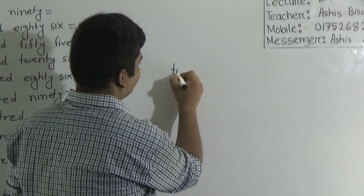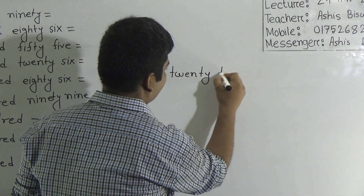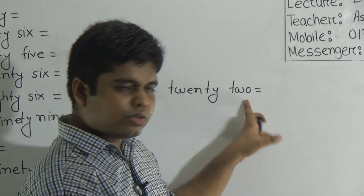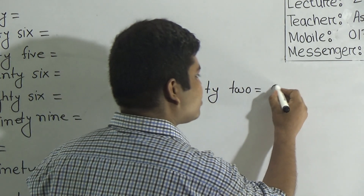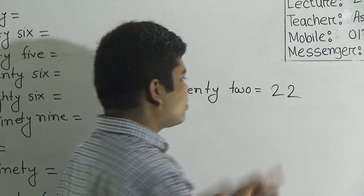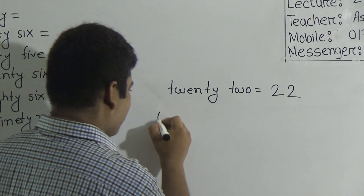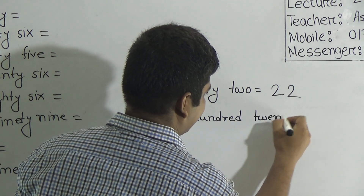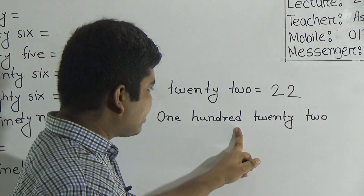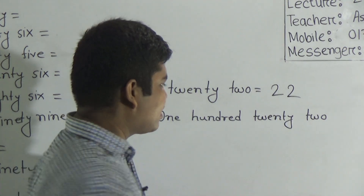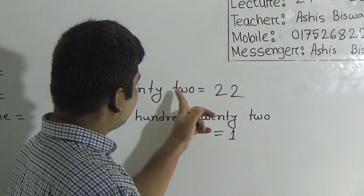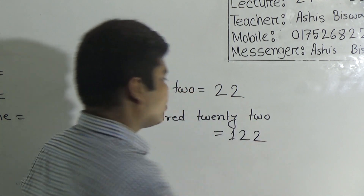Notice: 22. If I write this number in 'Write in Numbers,' then what do we do? 22 — so first of all, we write 2, then 2. So 22. Again, 122. Notice 122 — that means 3 digits. For this reason, here I write 100 and 22. 22 means 22, so write here 22. I hope you have understood.